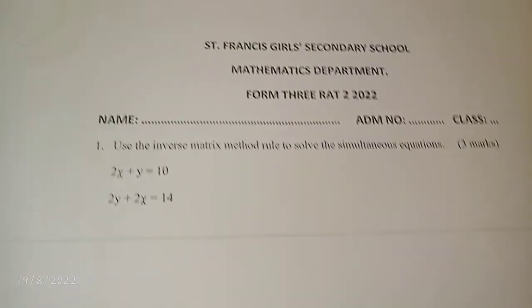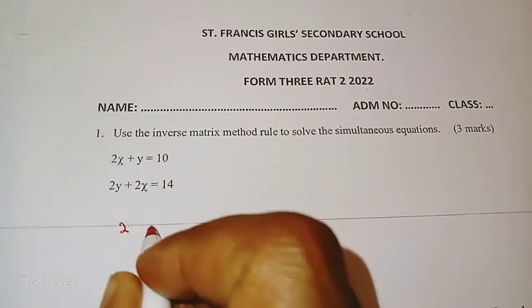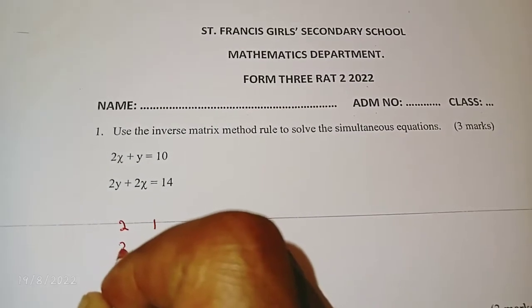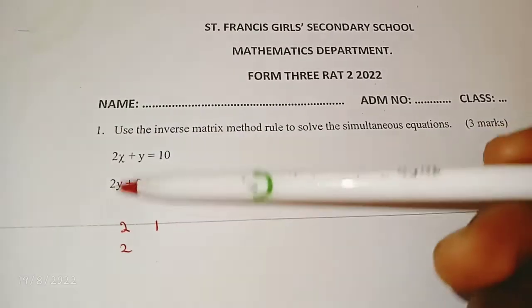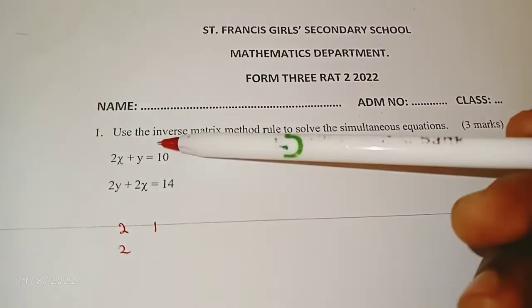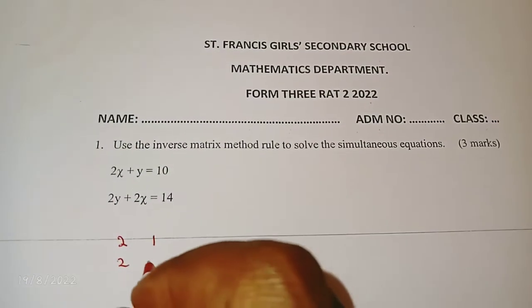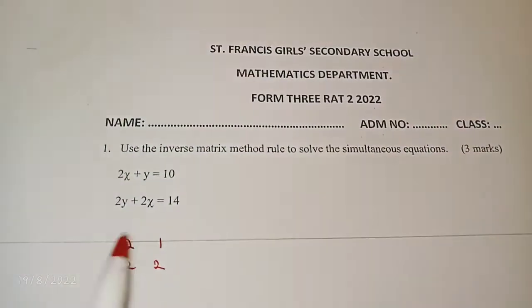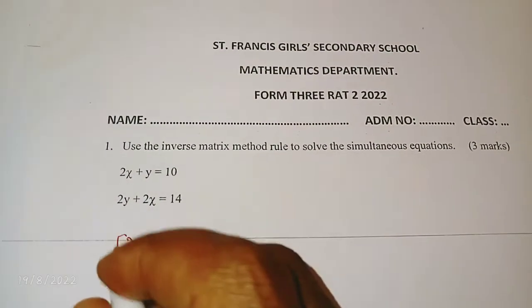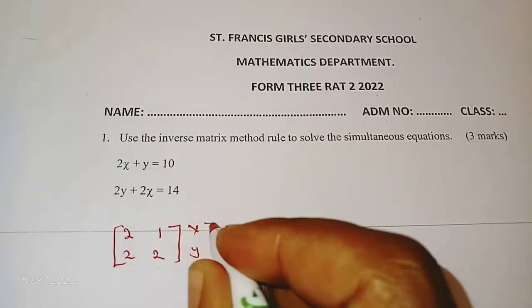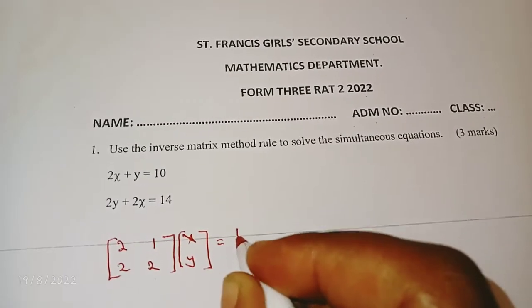We have the first thing we need to do is to extract a matrix from here, and we have 2, 1, then 2. It's always important to check what you have here. You can see these variables don't match - we have x, y, y, x. You should have x, x, y, y or y, y, x, x. Even if I were to bring this here, the matrix doesn't change. So you have x, y equals to 10, 14.